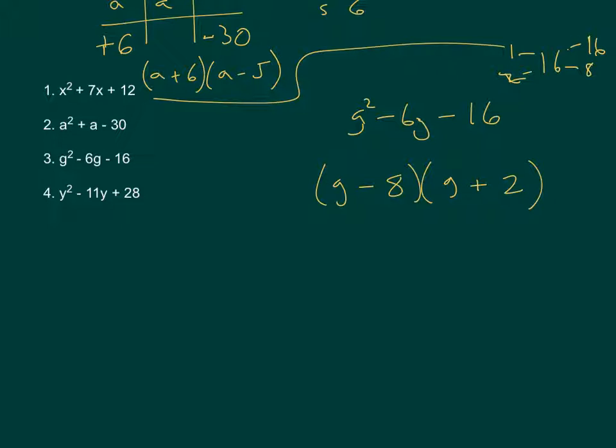And then the final one, in this one, it's where the c term is positive, but the b term is negative. So we have y and y. But we can see that if this one's positive, then either both of them are positive or both of them are negative.